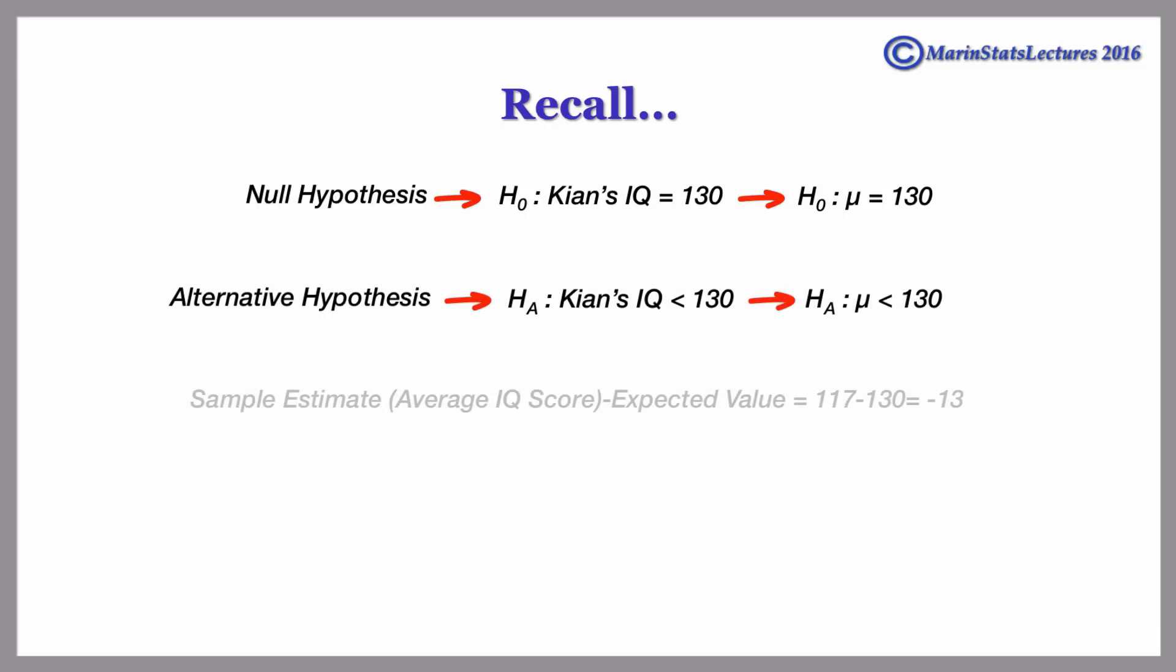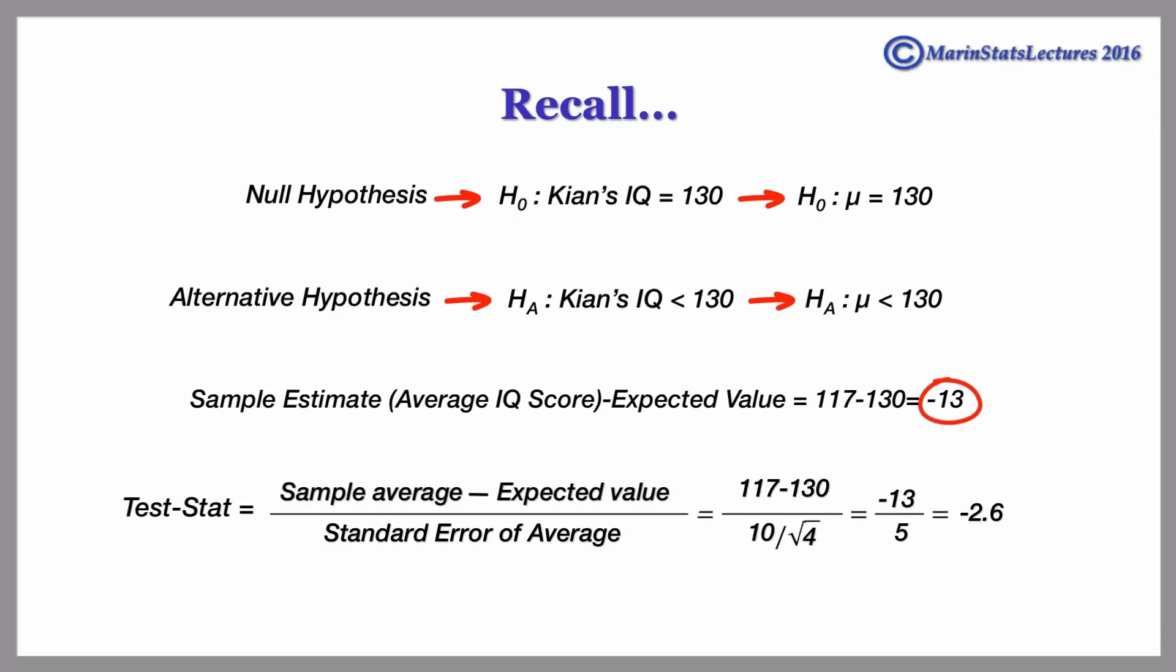And we had found that Kian's average IQ score of 117 is 13 points below 130, and in terms of a test statistic, it is 2.6 standard errors below 130.